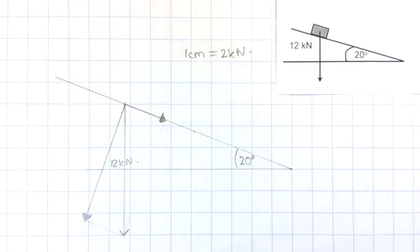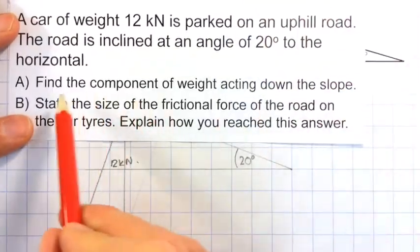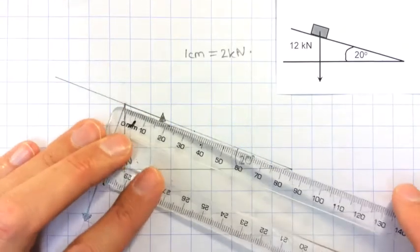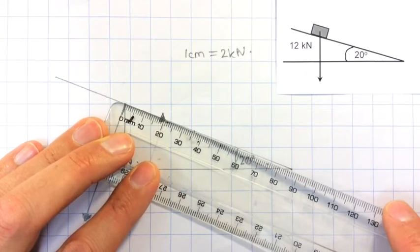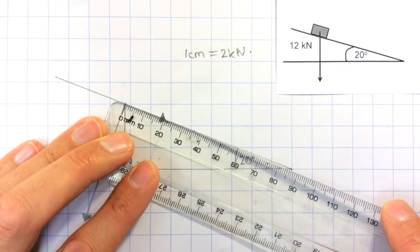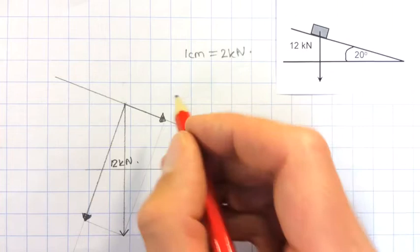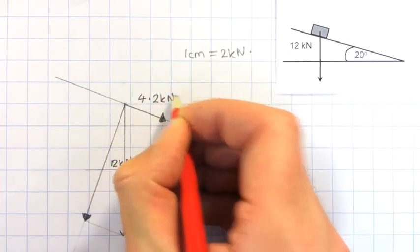What I need to do now, I was asked in the original question to find the component of the weight acting down the slope. That would be this component here. If I measure the length of that, that comes out at about 2.1 cm. So, 2.1 cm would give me 4.2 kN.